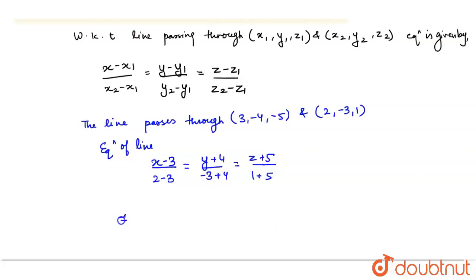After simplifying, what do I get? I get (x - 3)/(-1) = (y + 4)/1 = (z + 5)/6. So, let this be equal to k.